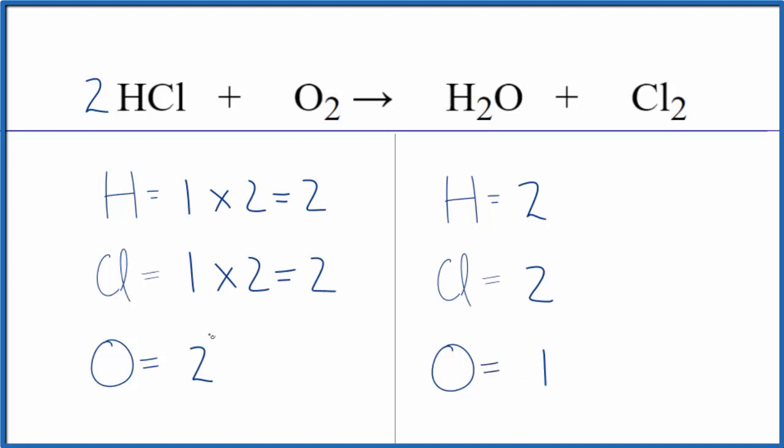This does present a bit of a problem now because our oxygens aren't balanced. So if we put a two here, that'll give us one times two, that'll balance the oxygens. Two times two, that'll give us four hydrogen atoms. So we're going to have to change our coefficient here to four.